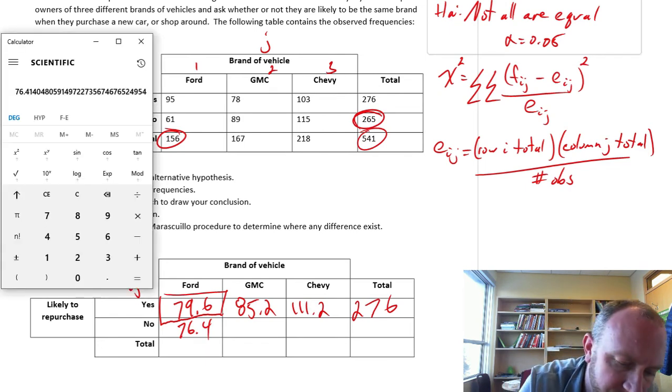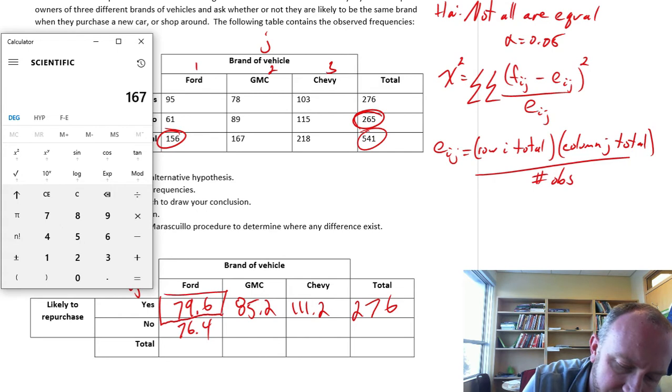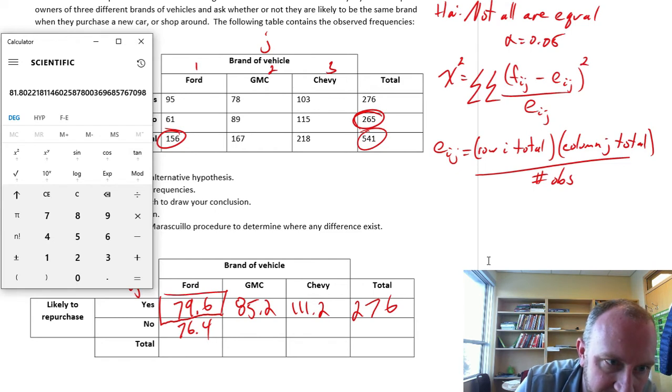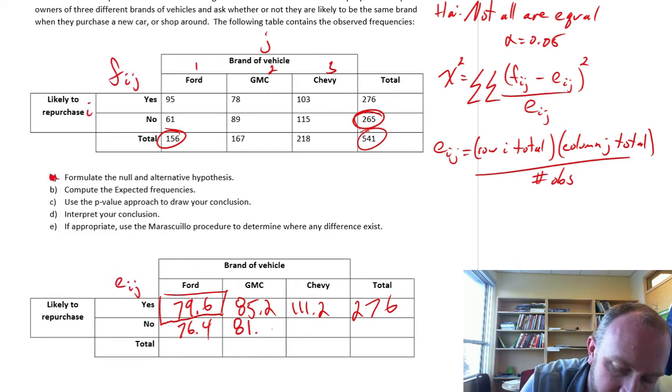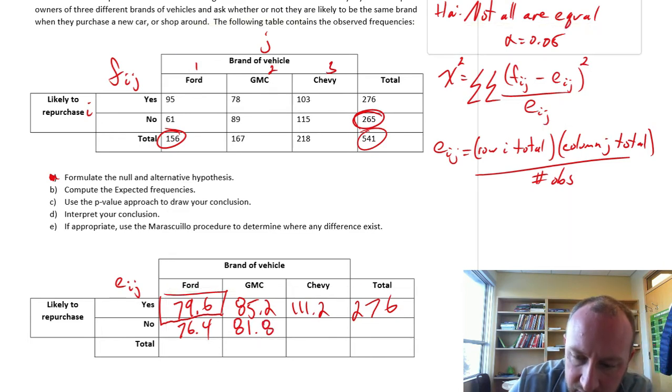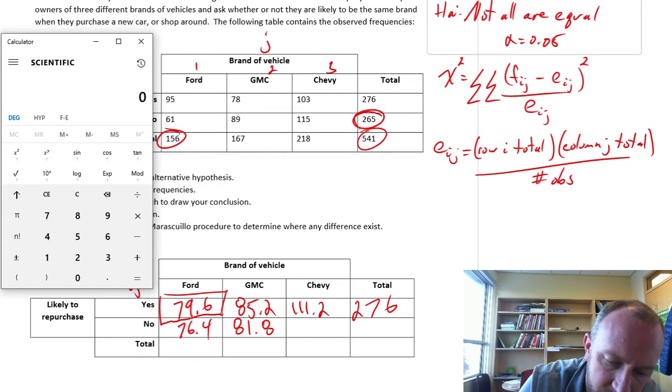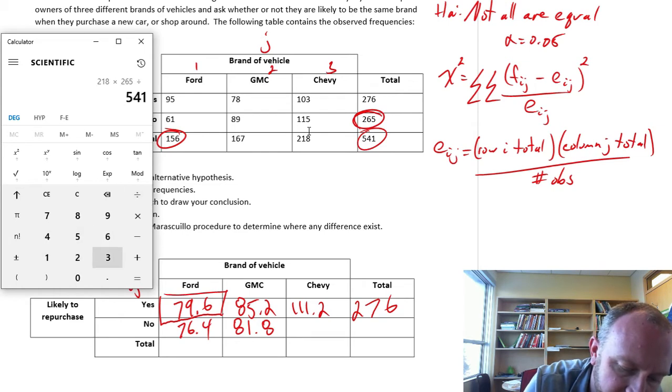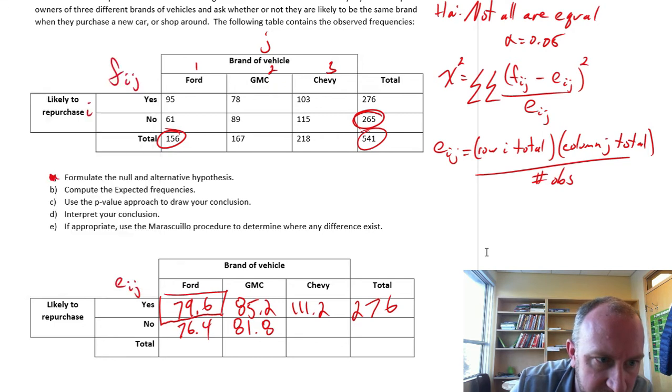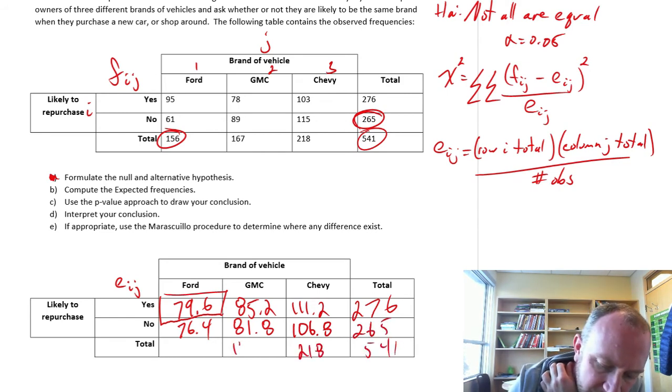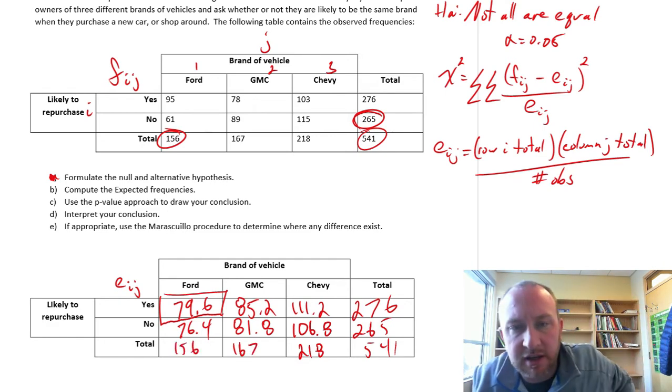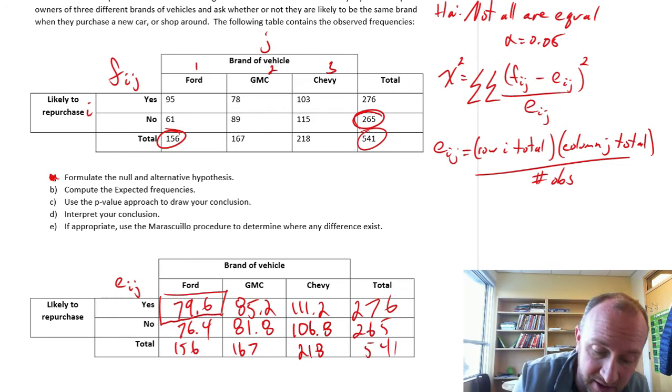And the next one, now we're using 167 times 265, always divided by the same, 81.8. And the last one here, 218 times 265 divided by 541, which is 106.8. And then you can fill in all of these. We don't actually need these totals for anything, but why not fill them in just to complete the table. So there we have all of our expected frequencies.